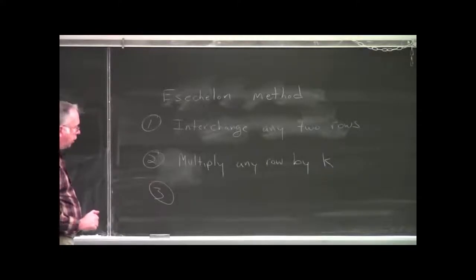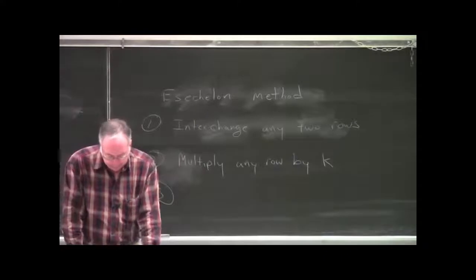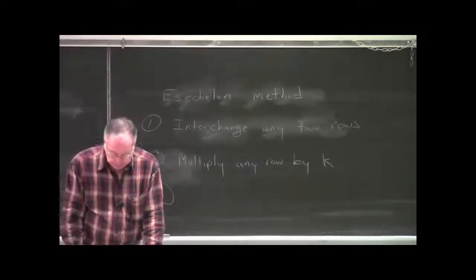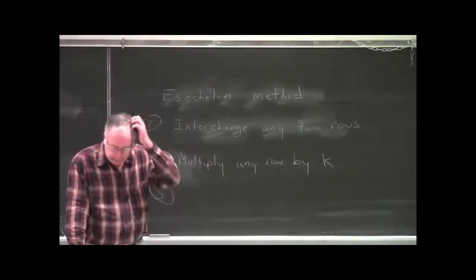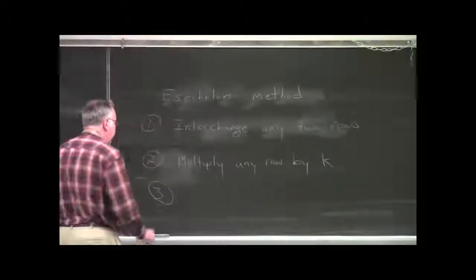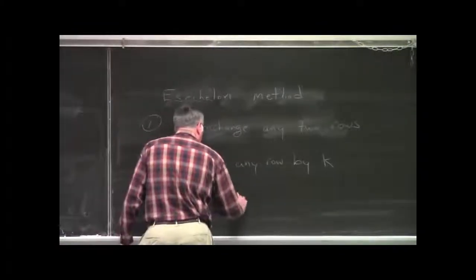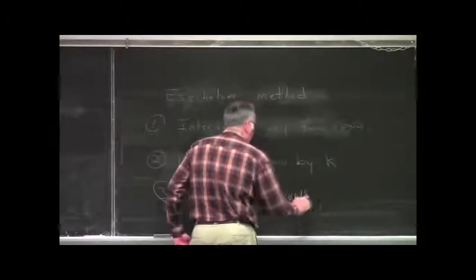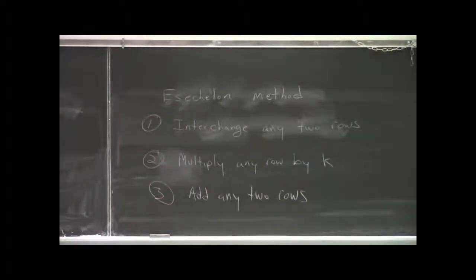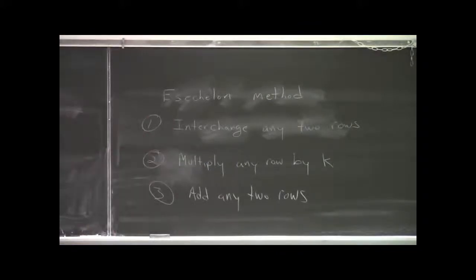And, three, you can, well, basically, this is repeating 1 and 2. This is what the book does, so I'll do the same thing as the book. You can add any two rows. Actually, what the book says is, you can multiply any row by k, and then add it to another row. But, that's just repeating number 2. So, these are really the three operations you can perform.